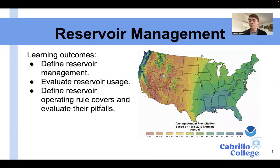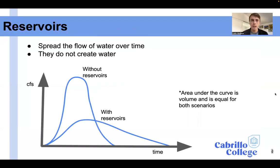Here we have the annual precipitation in the entire United States. The eastern United States gets a lot more rain than the western United States. And so in all of these locations, reservoirs are a useful tool to help spread out the usage and delivery of water over a period of time. Reservoirs are an artificial lake — typically a dam is constructed in a river valley, and that impounds some volume of water with the purpose of spreading this flow of water over time.